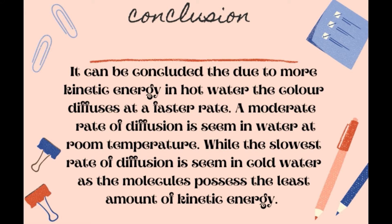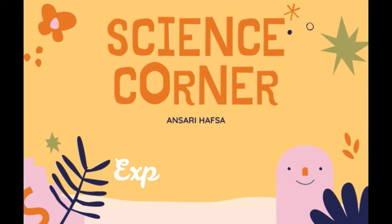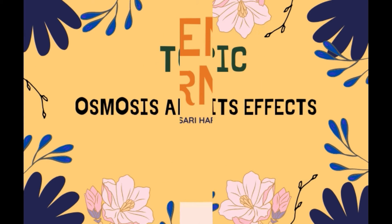From this we can conclude that due to more kinetic energy in hot water, the color diffuses at a faster rate. A moderate rate of diffusion is seen in water at room temperature, while the slowest rate of diffusion is seen in cold water, as the molecules possess the least amount of kinetic energy. Moving on to the next experiment, we will be learning more about osmosis and its effects on raw potato sticks.